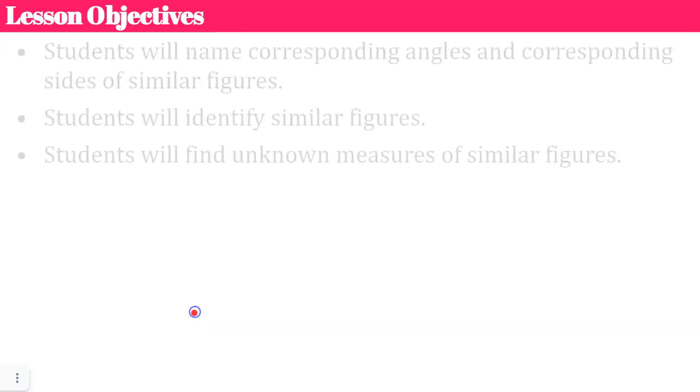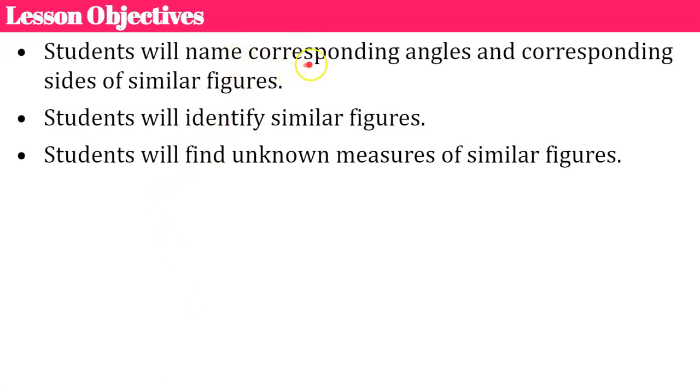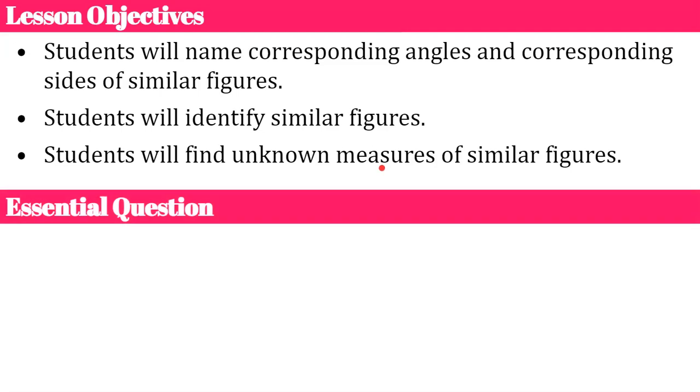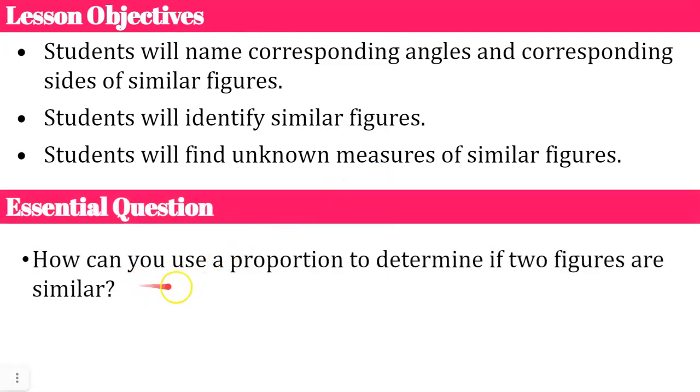Our objectives today are that you will name corresponding angles and corresponding sides of similar figures, and that you will be able to identify similar figures. You will also use what we learn about similar figures to find unknown measures. The question I'd like you thinking about today is how can you use a proportion to determine if two figures are similar?